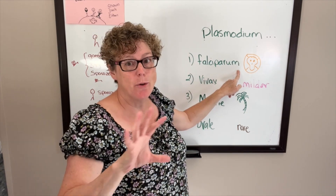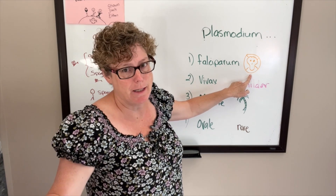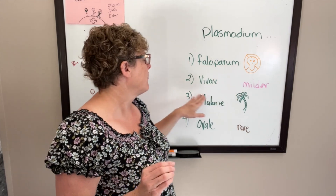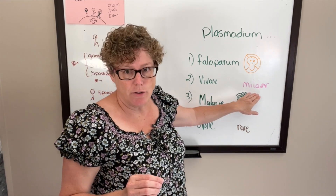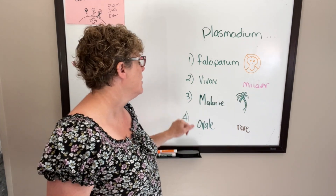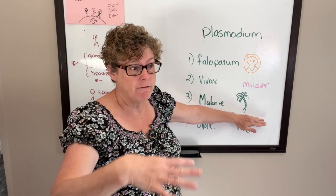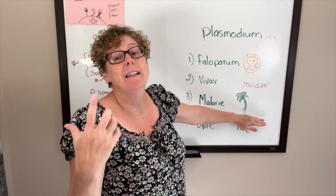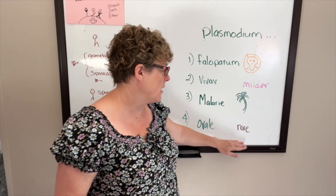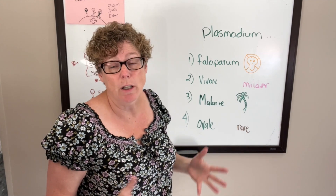Plasmodium falciparum is the most deadly — it causes an acute illness with hypotension, high fevers, and severe signs and symptoms. Plasmodium vivax is milder; think 'viva' — you're likely to live from this one. Plasmodium malariae is found in tropical areas and causes mild infection in local populations, but more severe symptoms in tourists. Plasmodium ovale is rarely seen anymore and is believed to be on its way to extinction.